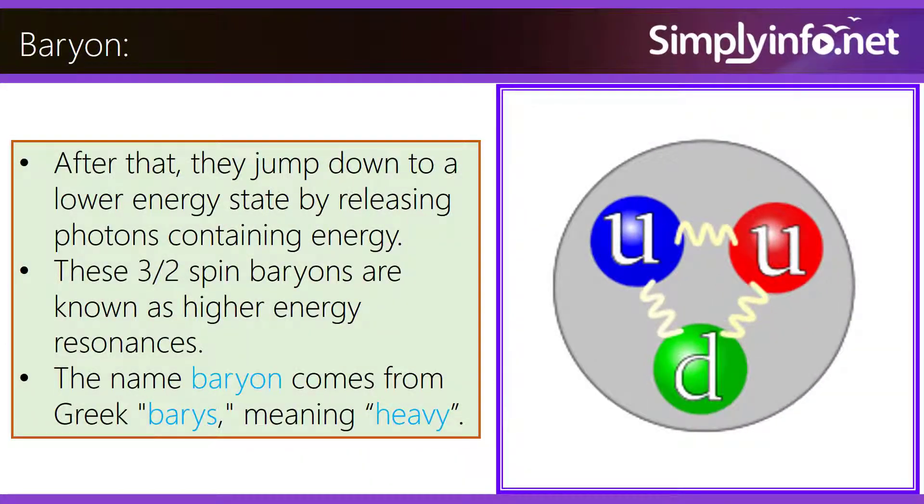After that, they jump down to a lower energy state by releasing photons containing energy. These 3/2 spin baryons are known as higher energy resonances.